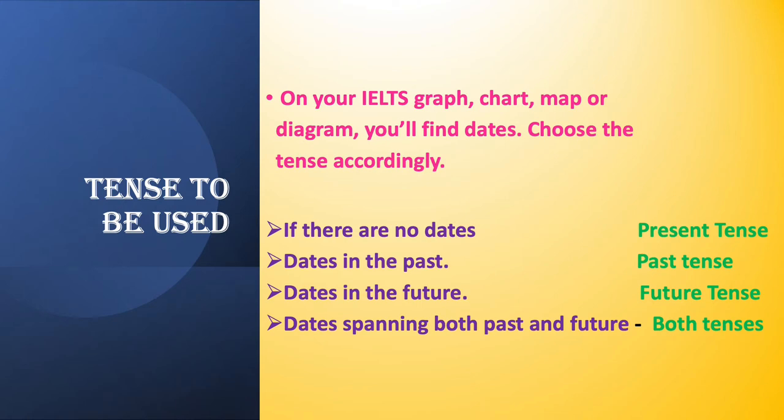When it comes to tense, you have to choose the tense by looking at the data. In your IELTS graph, chart, map, diagram, or table, you might find dates. If there are no dates mentioned, you have to write in present tense. If the dates are in the past, you have to use past tense. If the dates are in the future, you have to use future tense. And if the dates are spanning both past and future, you have to use both past and future tenses.